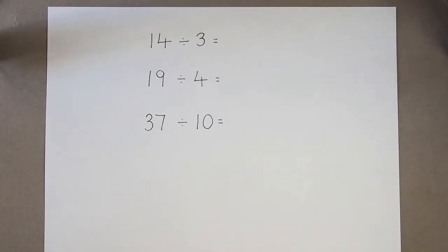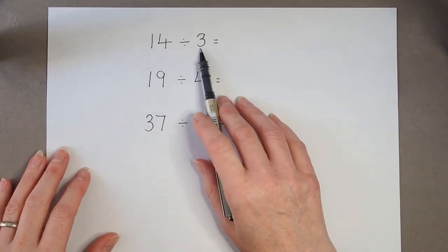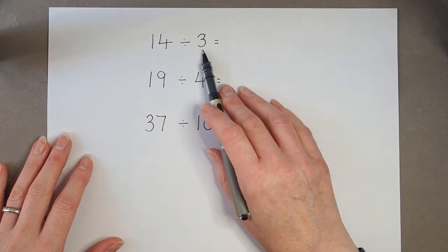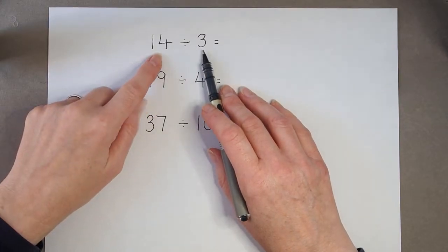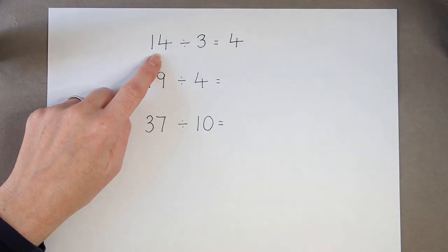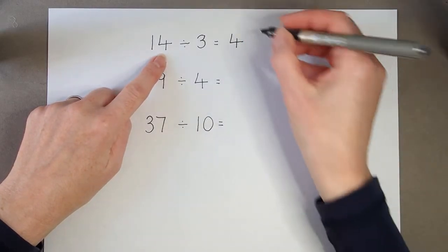So let's try a few more calculations without using counters this time. 14 divided by 3. So I know my 3 times table that's going to be 4 because 3 fours are 12 which means I've got a remainder of 2.